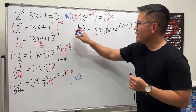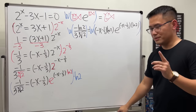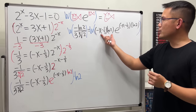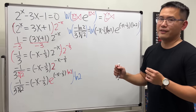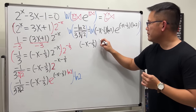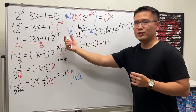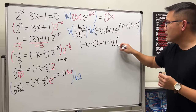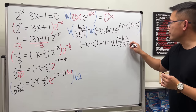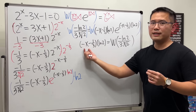Now apply the Lambert W function — the product log — to both sides. Taking it on the right extracts just the fish, giving us (−x − 1/3) · ln 2. On the left we have W(−ln 2 over (3 · cube root of 2)). Don't worry about that value for now — just write it down.